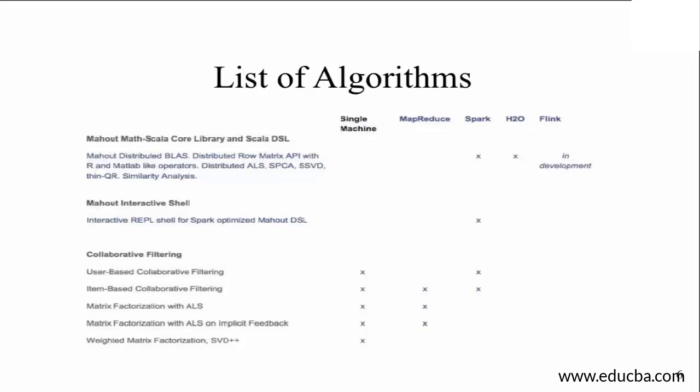similarity analysis, which is applicable across Spark, H2O, and Flink, which is still in development as of this presentation. You have the interactive shell, which are the shells for Spark optimized Mahout DSL.